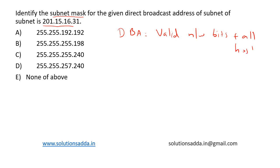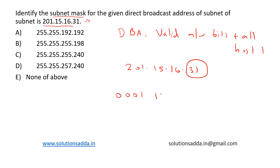The last octet of this IP 201.15.16.31 is 31, and this is a Class C network IP. The value 31 can be represented in binary as 00011111. So in the subnet mask, all bits should be ones except the last five digits.